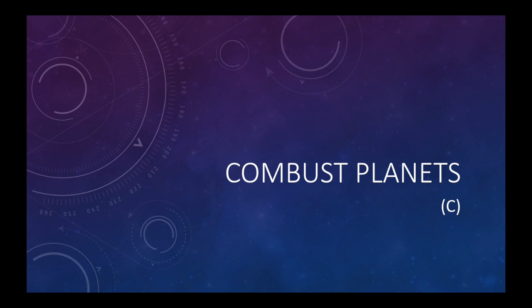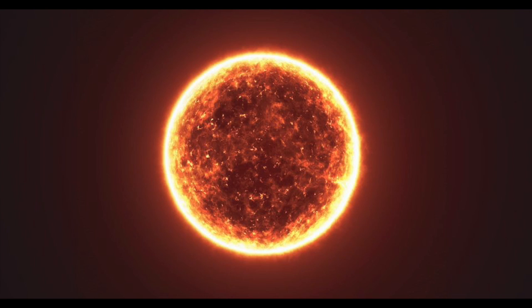What happens in combustion is because Sun is a fiery planet, it's the most fiery planet with immense energy. When planets come close to Sun, because of the heat of the Sun, that planet gets burned and hence the qualities of that planet, whatever it promises in the charts, those things' effect reduces.